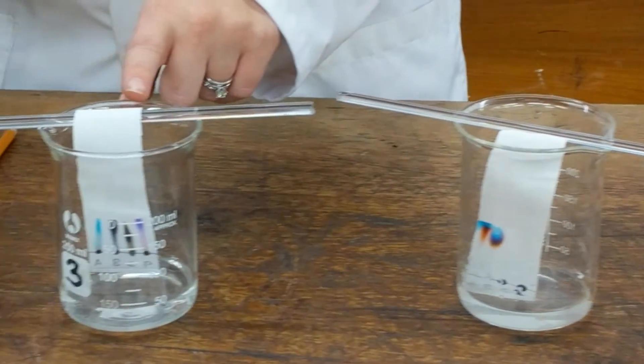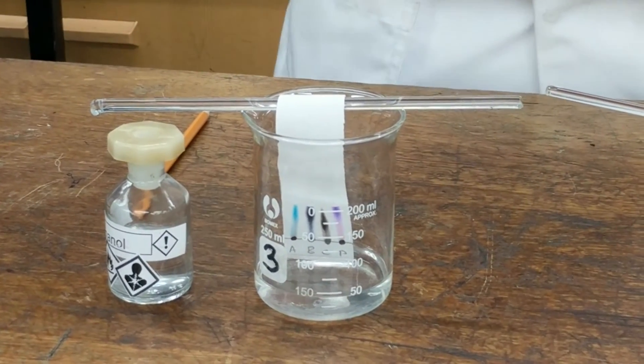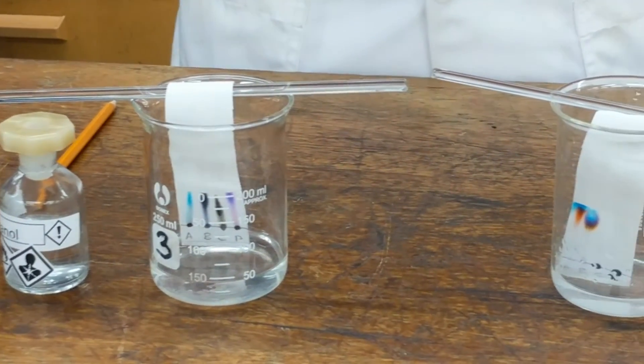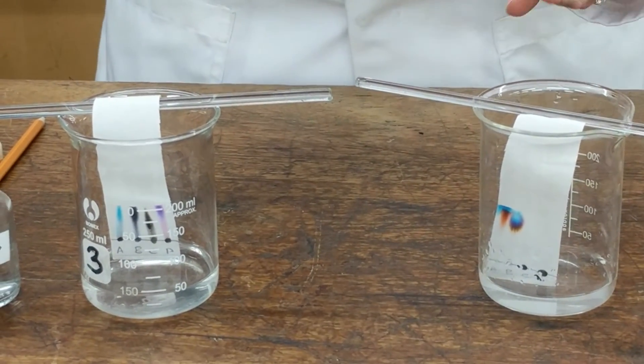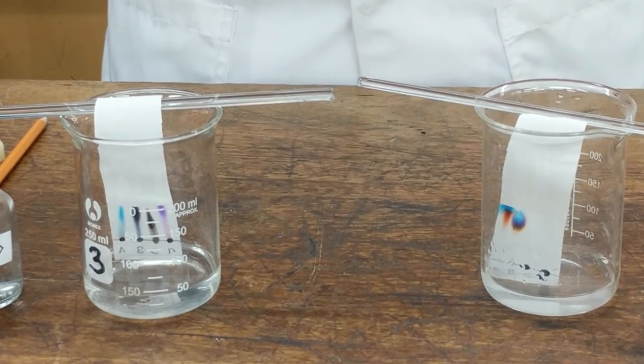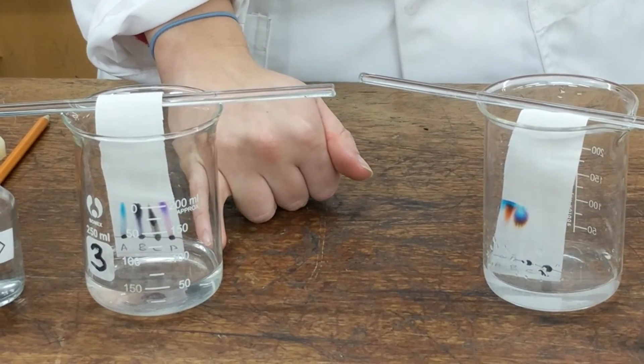However, over here, all four of them have moved over. This is because some inks are soluble in water, some are not. The permanent markers, which were actually points C and D, are not water-soluble. However, they will dissolve in another solvent, such as ethanol.